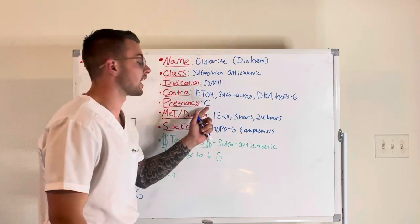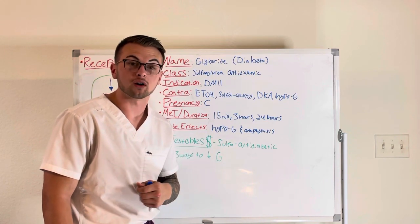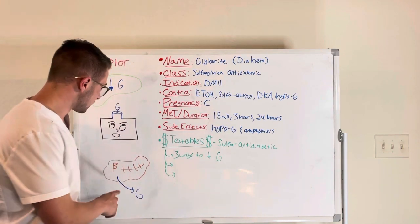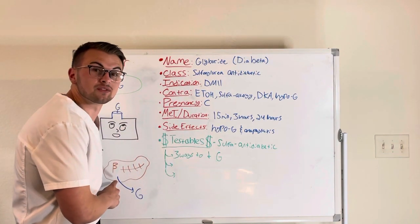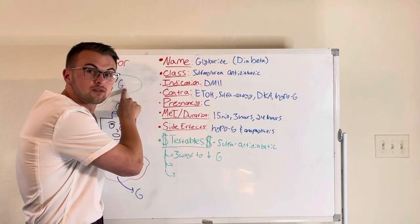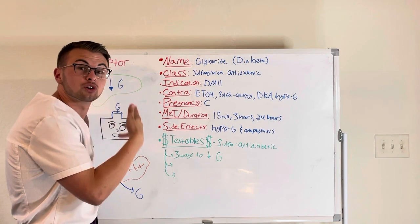It has a pregnancy category of C. Now what we need to know about sulfonylurea antidiabetics is that they work in three ways: They increase beta cell release of insulin, they decrease gluconeogenesis in the liver, and they increase insulin receptor sensitivity.